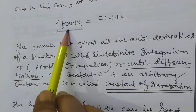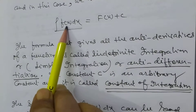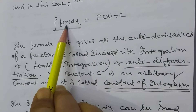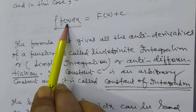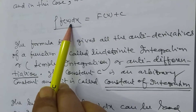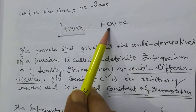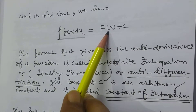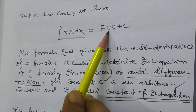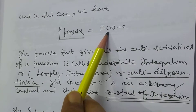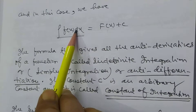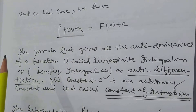Here f(x) equals 3x². So the integration of 3x² dx is x³. Why? Because the differentiation of x³ is 3x².